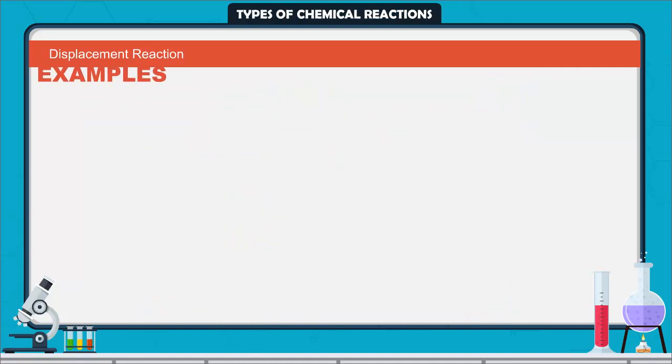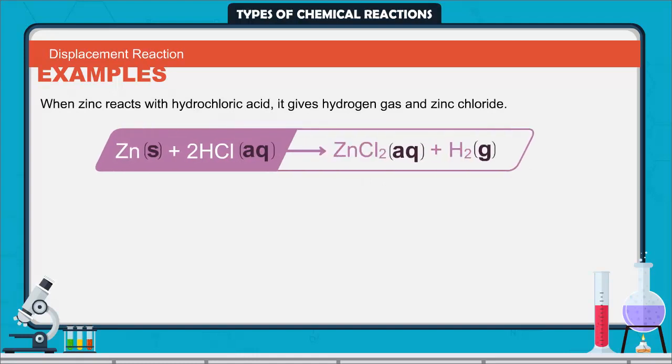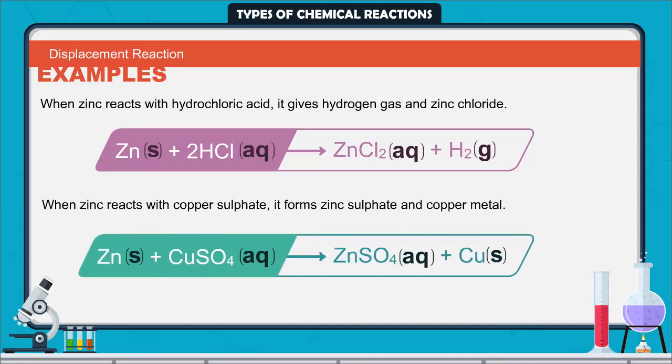Some more examples are here. When zinc reacts with hydrochloric acid, it gives hydrogen gas and zinc chloride. When zinc reacts with copper sulfate, it forms zinc sulfate and copper metal.